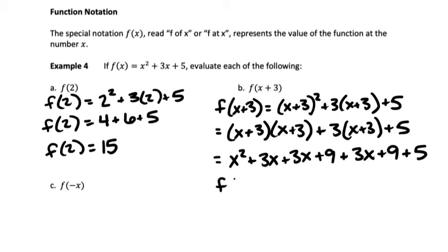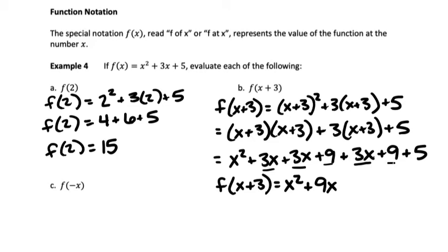Now I need to combine everything together. We have x squared, then plus 3x plus 3x plus 3x — a total of plus 9x — and we have plus 9 plus 9 plus 5, which gives plus 23. So the answer is x squared plus 9x plus 23. If I plug in something that has a variable in it, my answer is most likely going to have that same variable, so I don't get a single number answer like I did for part A.